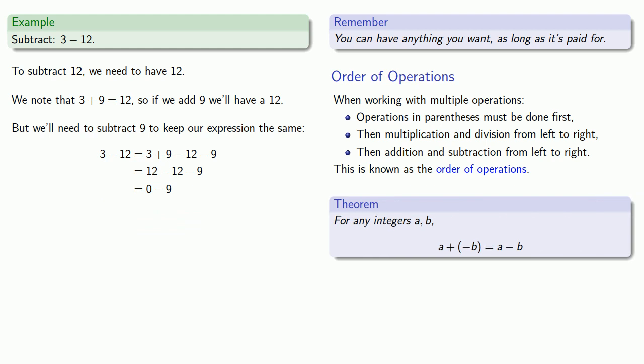Remember our theorem works both ways. a minus b is the same as a plus the additive inverse of b. So 0 minus 9 is the same as 0 plus the additive inverse of 9. And because we're adding 0 this is just going to be additive inverse of 9.